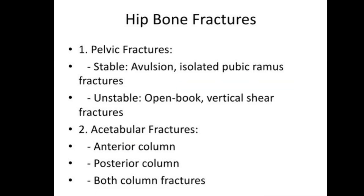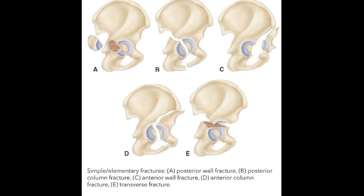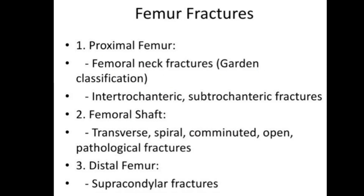Acetabular fractures include anterior column, posterior column, and both column fractures. These include posterior wall fractures, posterior column fractures, anterior wall fractures, anterior column fractures, and transverse fractures. Femoral fractures include proximal femur, femoral shaft, and distal femur fractures.